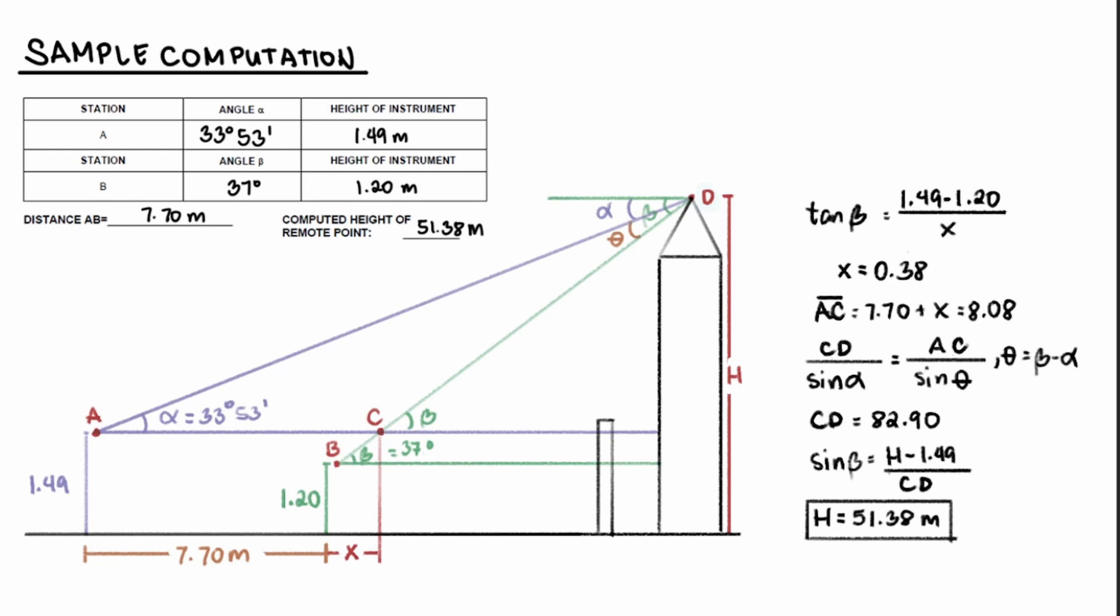For your class, just use the class values I have uploaded in Blackboard. And use that to fill in the table of your preliminary datasheet. And compute for the height of the remote point. Include the sample computation and sketch. The sketch can look like this figure shown. Or you may also just sketch the actual fieldwork.